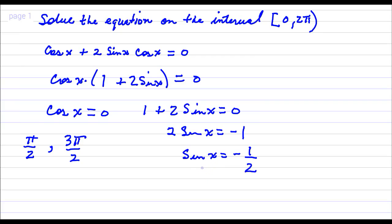This equation, the sine of what angle is negative 1 half? That would be 7 pi over 6, and then again at 11 pi over 6.